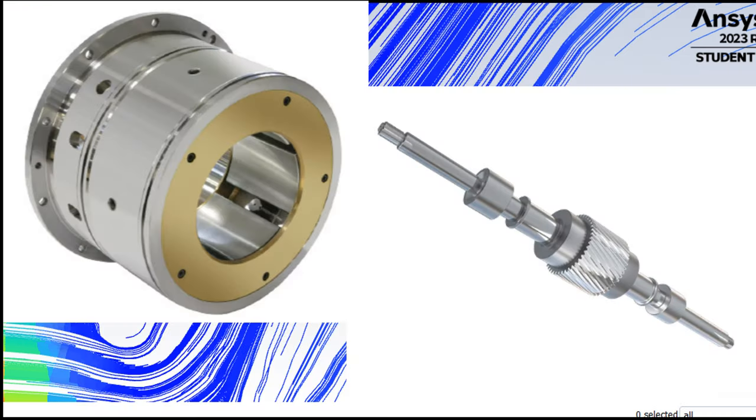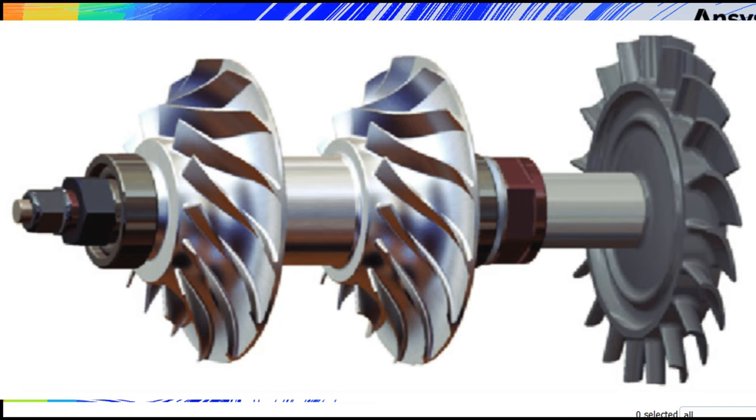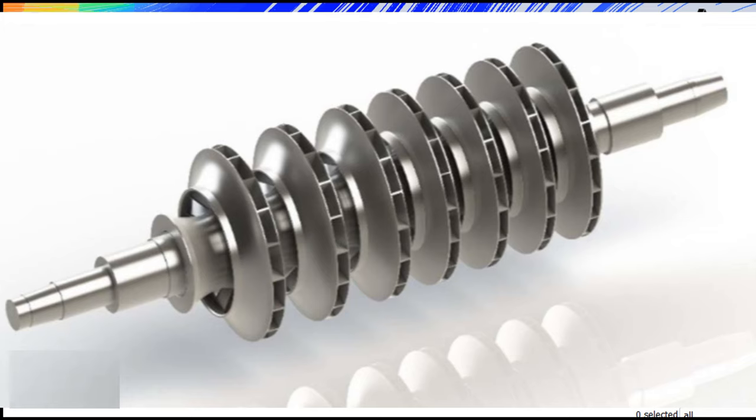Bearing and shaft. The impeller is connected to the compressor's shaft, which transfers the rotational energy from the driver to the impeller. Bearings support the shaft and allow it to rotate smoothly.